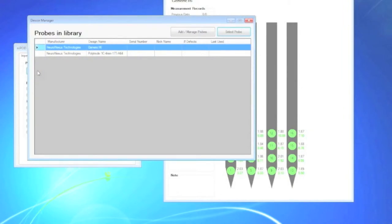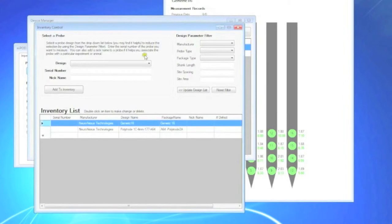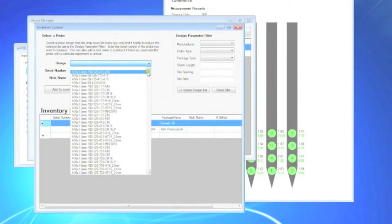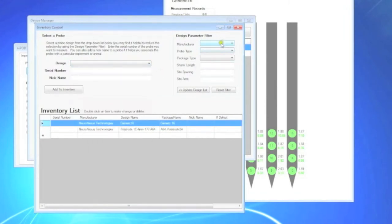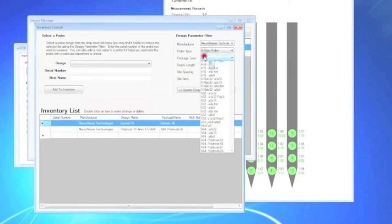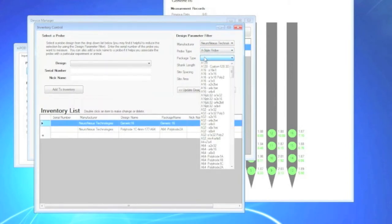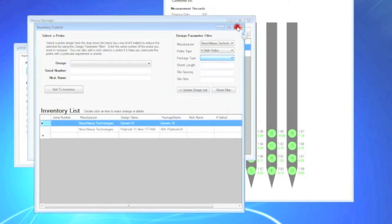You will need to add each probe to the Nipod database so that you can keep track of the measurements. To add a probe, you can search through the available probes or you can filter for a specific probe by following the steps on screen. It is helpful to select the exact probe design and package as the electrode sites will be mapped and visualized appropriately.